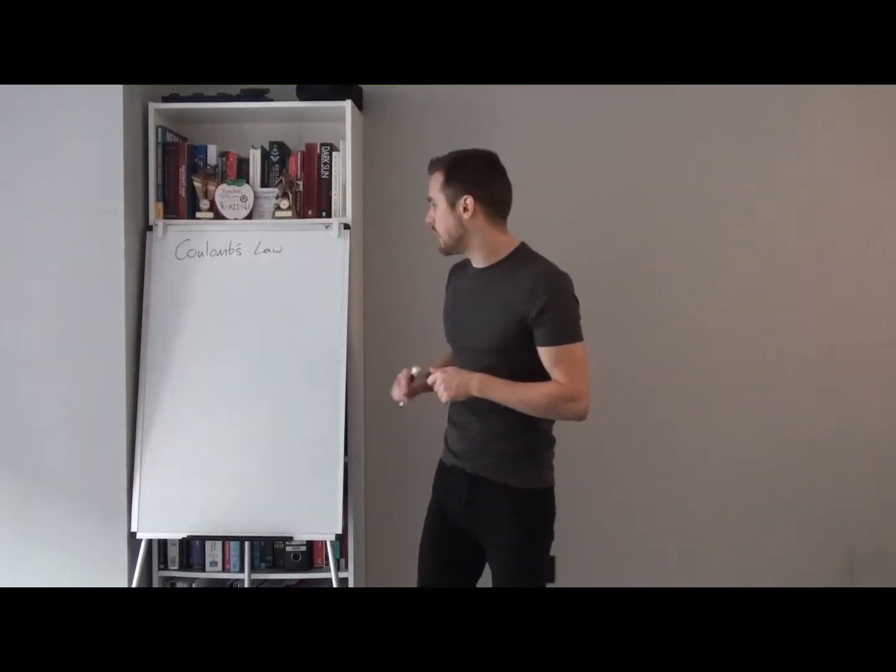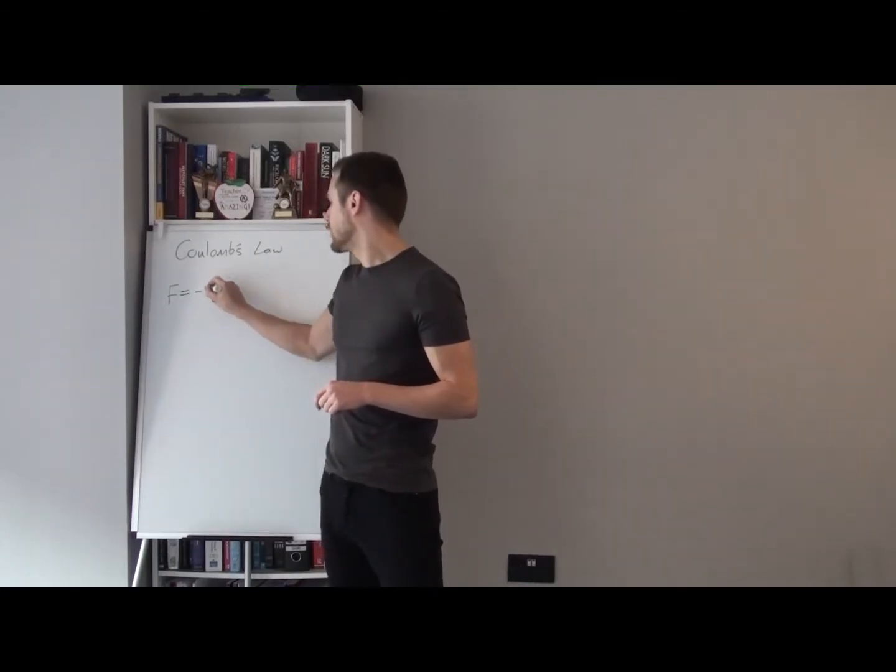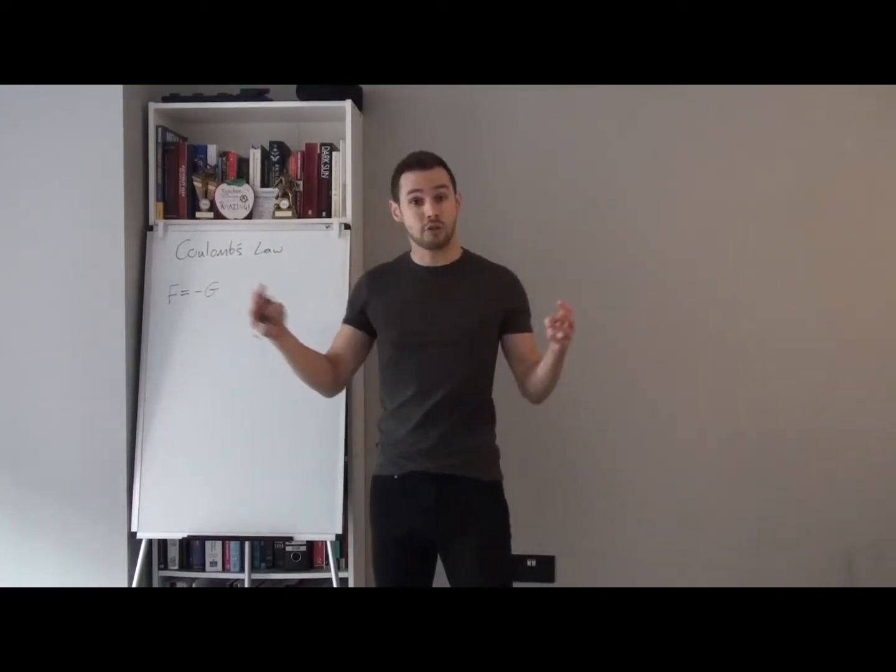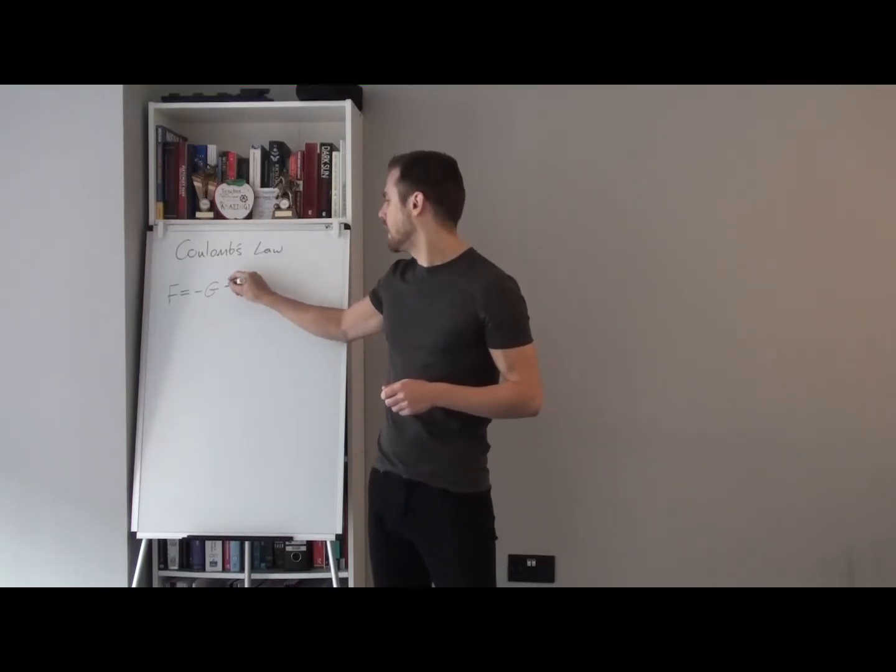We'll remember that that law is the force between two masses is going to be equal to minus G, where G is the gravitational constant, negative because it is an attractive force. And this is multiplied by m1, m2, divided by r squared.